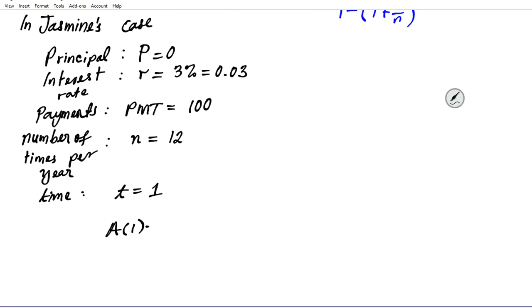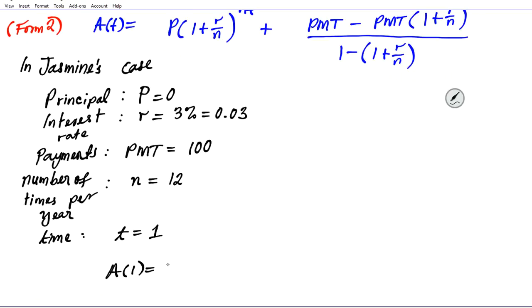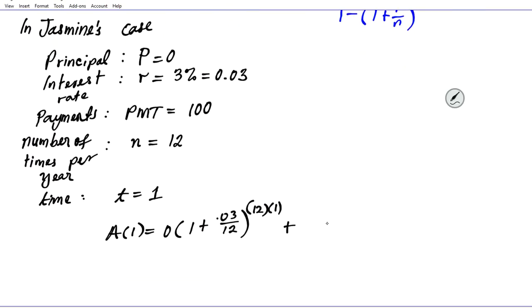Let's plug in all these values into the formula. We have the principal, 0 dollars, times (1 + 0.03/12)^(12×1). This is the growth in the principal over the first year. Since she didn't put any money down initially, nothing grows. The zero we're multiplying by basically nullifies this entire expression.